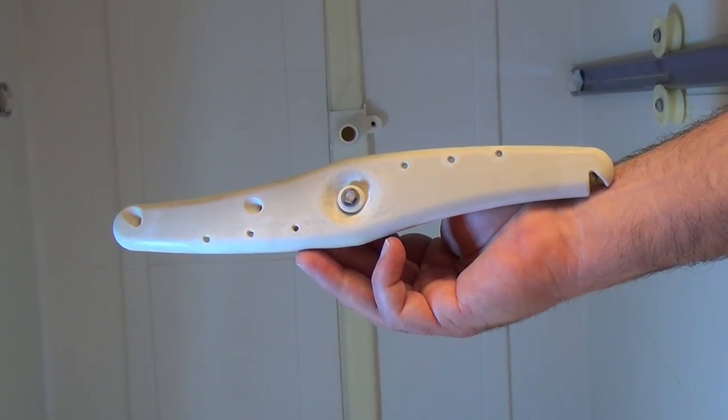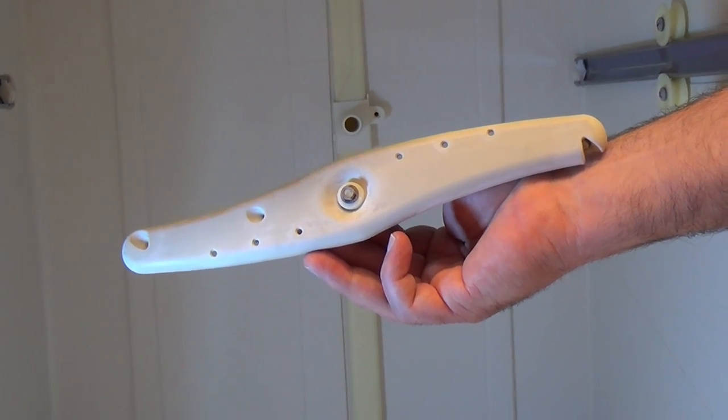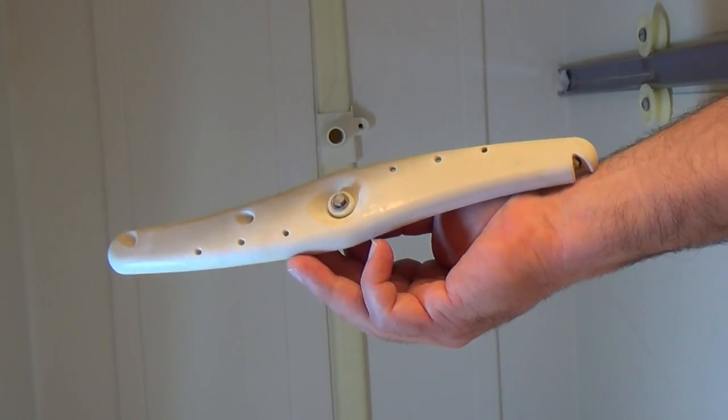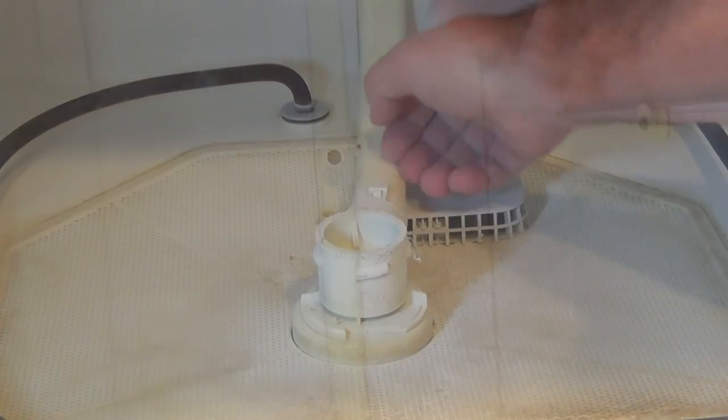This is the upper wand that's for the sprayer for the upper rack. So we can take this out, clean the holes in it also.